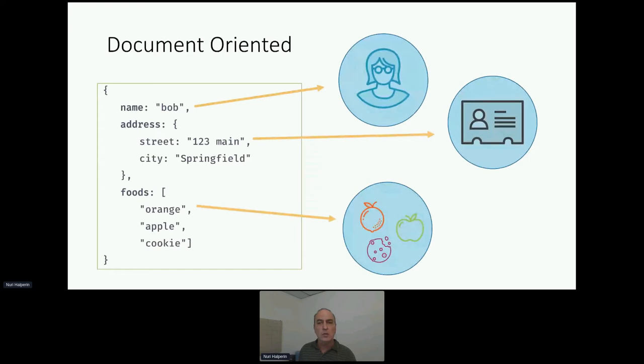With a document-oriented approach, it's fairly easy. Documents are flexible. You're allowed to store any number of fields in any nesting level, including groups of things like arrays. So we see the customer here, let's say, has a name, Bob. That's our person.